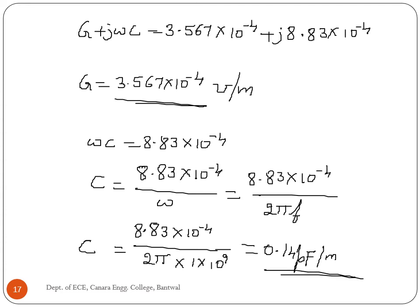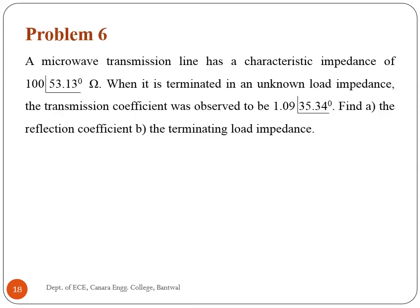So now we have R, G, C, and L values — all four primary constants have been determined for problem five.